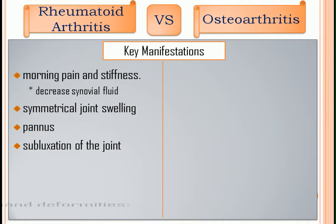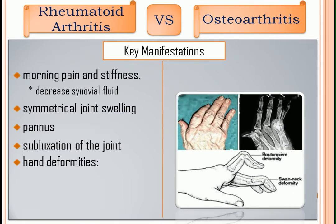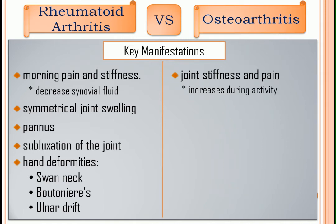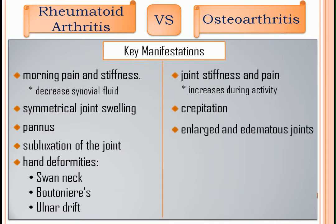Lastly, hand deformities — a late manifestation that is irreversible. Key manifestations under osteoarthritis: First is joint stiffness and pain; the pain increases during activity and is relieved by resting the affected joints. Crepitus or crepitation — it is a dry, crackling sound from a moving joint. Enlarged and edematous joints. Asymmetrical joint swelling, usually on the dominant side.